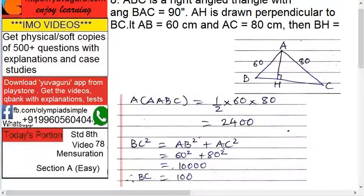BC square equals to what? AB square plus AC square, 60 square plus 80 square, that is 10,000. Therefore, BC equals to 100. Now, BC, you got it? Okay.